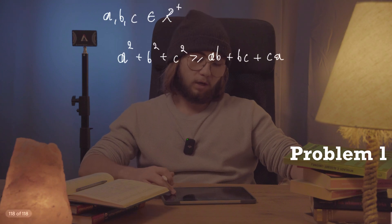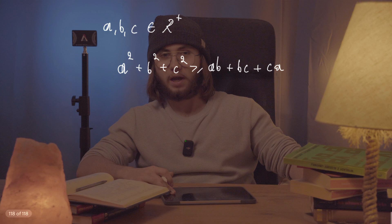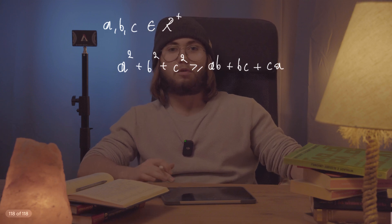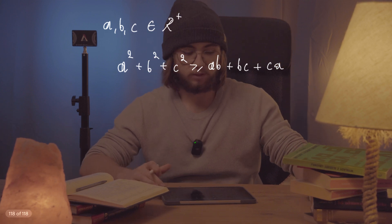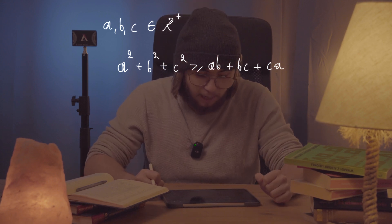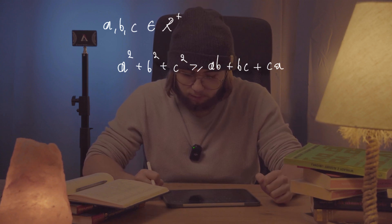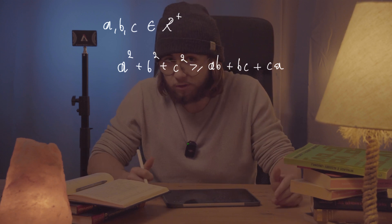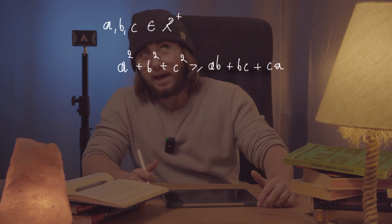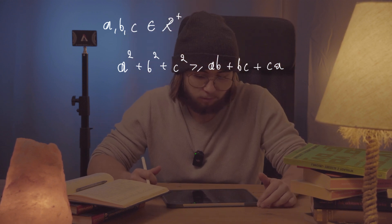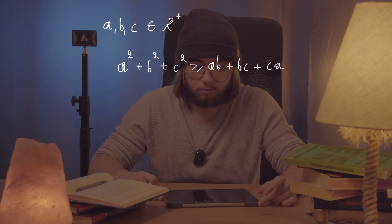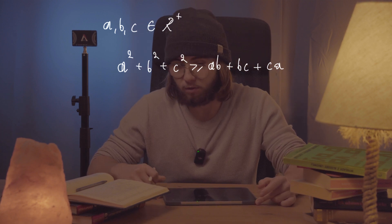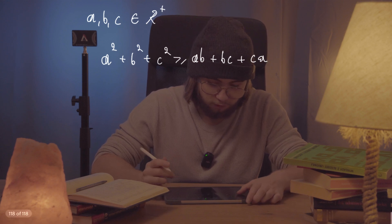Now let's do some problems. For the first problem — this is not going to be really hard, but I'd just like to show you how to use the rearrangement inequality in problem solving. A, B, and C are positive real numbers, and we're supposed to prove that A² + B² + C² ≥ AB + BC + CA. There are several ways to do this, for example by the AM-GM inequality or by completing the square, but I want to show the rearrangement inequality approach.